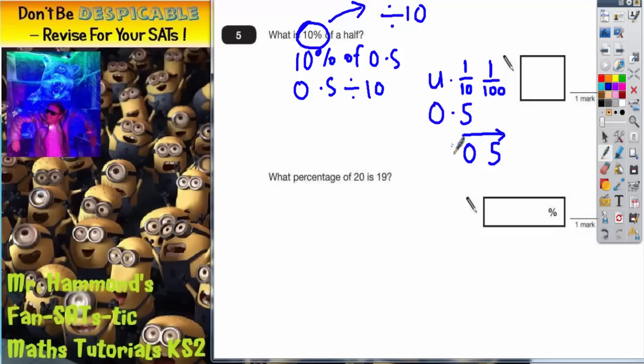We'll still have our decimal point lined up in the same position, and we can't just call it 0.05, we would need a 0 to go in there in the units. So all the digits have moved one place to the right, therefore we divided by 10, and if we divided by 10, we found 10%. So 10% of a half is 0.05.